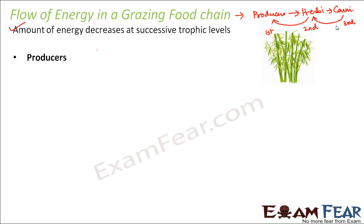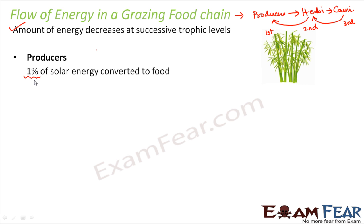We will start with the first trophic level — the producers. These producers get their energy from the sun. Only 1% of solar energy finally gets converted into food. Out of the total solar radiation, only 50% is photosynthetically active radiation, and plants can absorb around 2 to 10% of that. So finally, only 1% of solar energy gets converted into food.